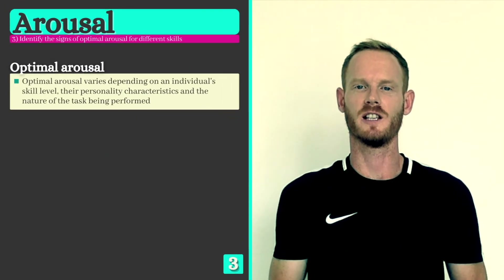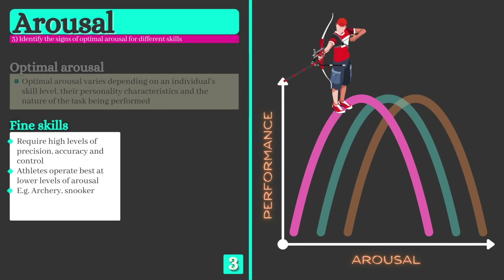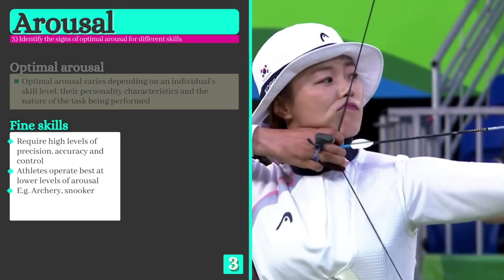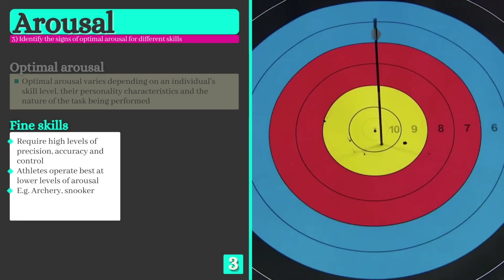Well, the simple answer is no, as Yerkes and Dodson also stated that the optimal point varies depending on an individual's skill level, their personality characteristics, and the nature of the task or skill being performed. For example, activities that require fine skills, such as archery or snooker, require high levels of precision and accuracy, meaning performers operate best at lower levels of arousal. Too much arousal here may affect their ability to remain calm and produce controlled, delicate movements.